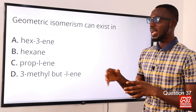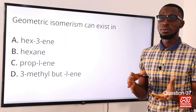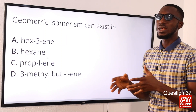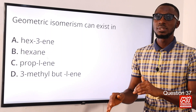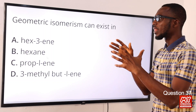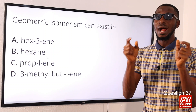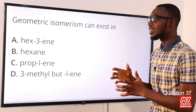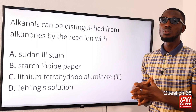Question 37: Geometric isomerism can exist in which of these hydrocarbons? Geometric isomerism is a type of isomerism where compounds share the same molecular formula but have different spatial arrangements. There is similarity in chemical properties but difference in physical properties. Geometric isomerism is common among alkenes. So it can exist in option A — the alkene.